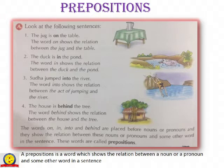Next: The duck is in the pond. Children, look at the picture — there is a duck which is inside the pond. The word 'in' shows the relation between the duck and the pond. Next: Sudha jumped into the river. There is a girl who jumped into the river. The word 'into' shows the relation between the act of jumping and the river.